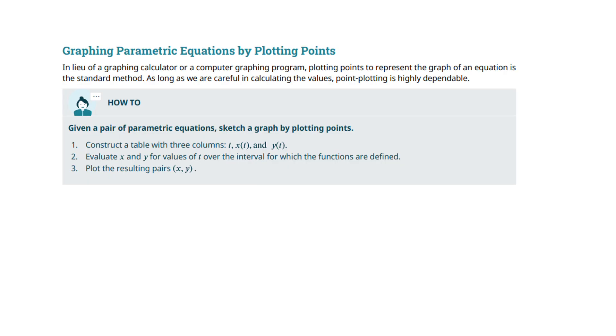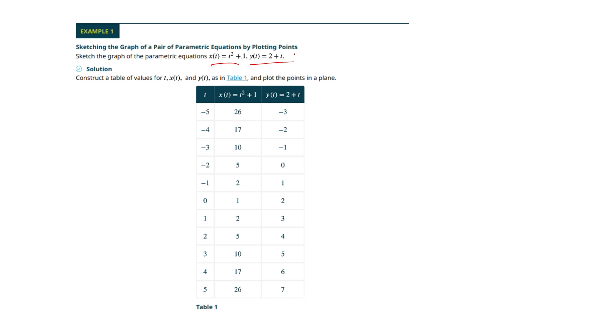Graphing parametric equations by plotting points is what we've already seen. I've got my parametric equations. Remember x is a function of time and y is a function of time, so some object is moving around the plane. That's what the parametric part of this does. Now you graph it like you would before. I've got my values for x and my values of y, but what's different is that we've added a t column.